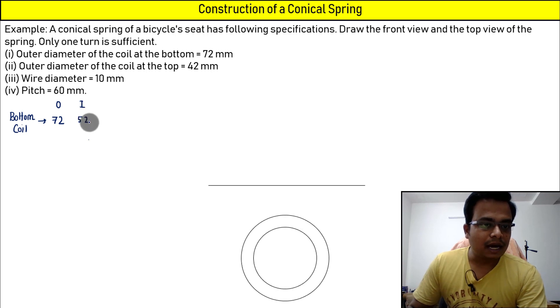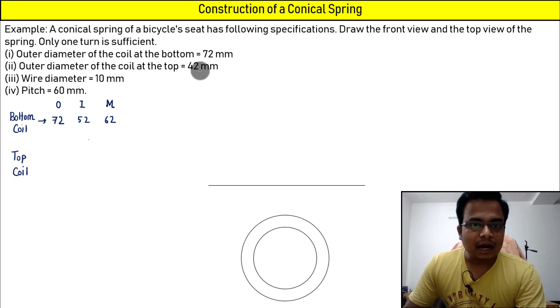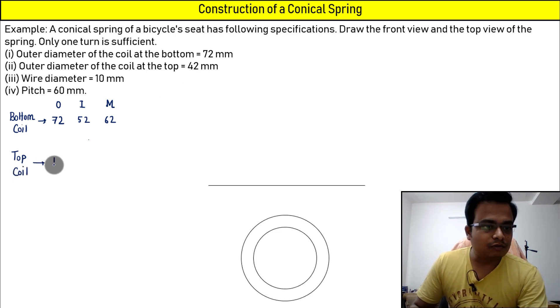And mean is going to be—not 42 but 62. In the same manner, there is going to be a top coil. That top coil is having an outer dia of 42.